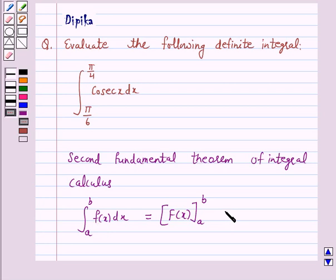And this is equal to F(b) minus F(a). That is, the integral from a to b of f(x) dx is equal to the value of the antiderivative F at the upper limit b minus the value of the same antiderivative at the lower limit a.